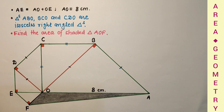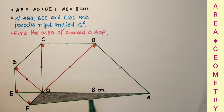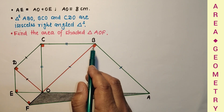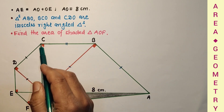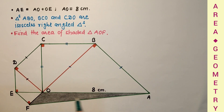We are given that OAB is an isosceles right angle triangle with OA as 8 cm. AE is a straight line, with E, O, and A as collinear points. B, C, O is another isosceles right angle triangle, and C, D, O is also an isosceles right angle triangle. We have to find the area of the shaded triangle — area of triangle AOF.